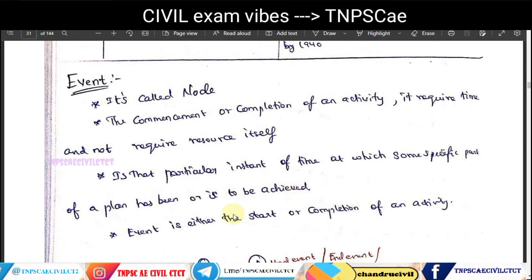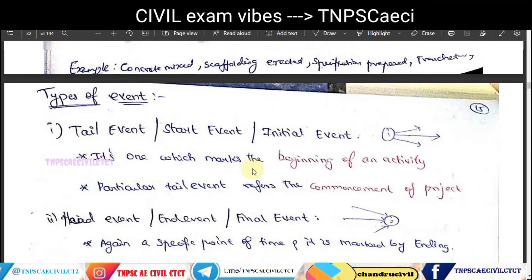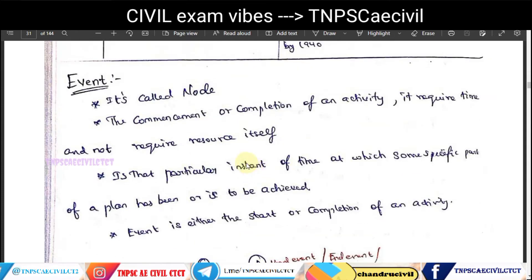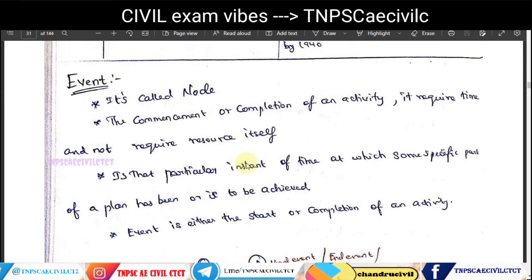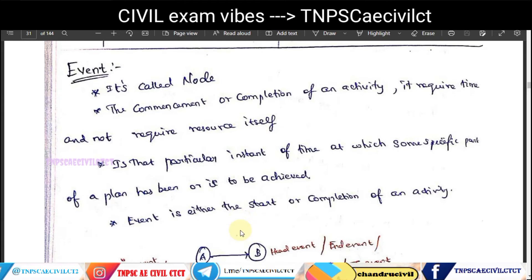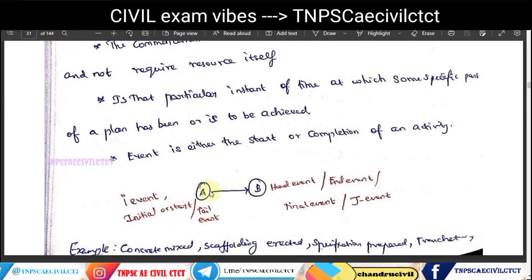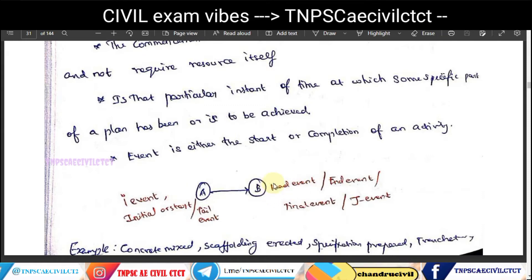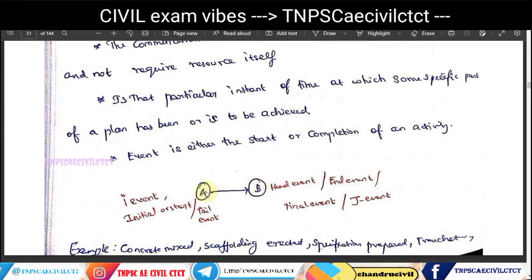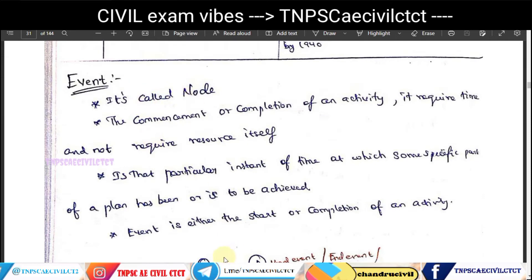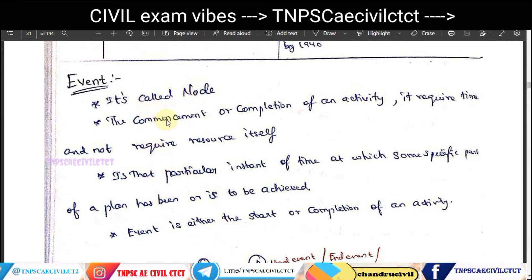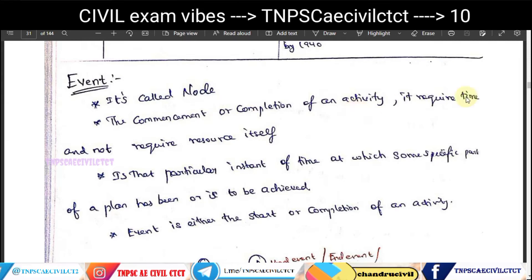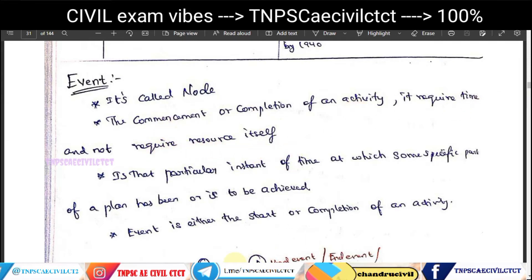Next, we discuss types of events. An event is a point in time and is part of an activity. It is called a node. The completion of one activity marks the start time of the next. An activity requires both time and resources, whereas an event requires time but not resources.